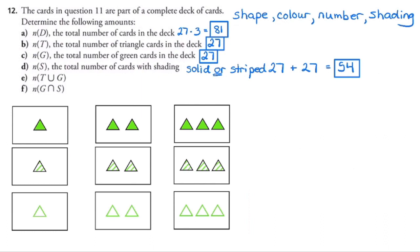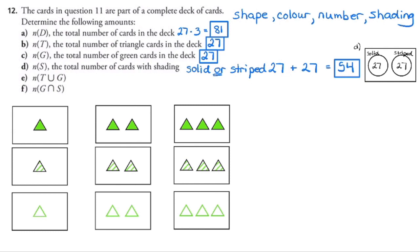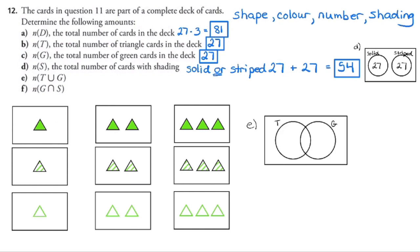We could also use a Venn diagram to organize this. For solid or striped, we ask: can a card be both at the same time? No — a card cannot be both solid and striped, so we use disjoint circles. There are 27 solid and 27 striped, so solid or striped equals 54 cards. For question E — triangle or green — we ask: can a card be both a triangle and green? Yes, clearly it can, so we set up intersecting circles. We have 27 triangle cards and 27 green cards.